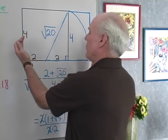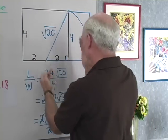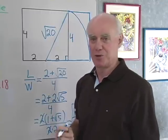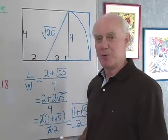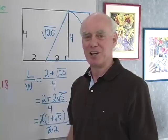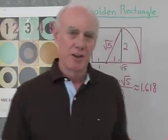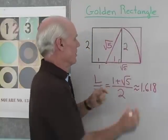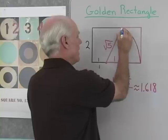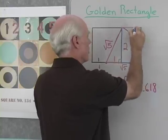So any golden rectangle, regardless of what size square you start with, will always end up giving you the same ratio for length to width, and that ratio is called the golden ratio. Now I want to go back to the first golden rectangle we worked with. One of the interesting things about the golden rectangle is that when I construct it like this, this little rectangle that I get over here also turns out to be a golden rectangle.